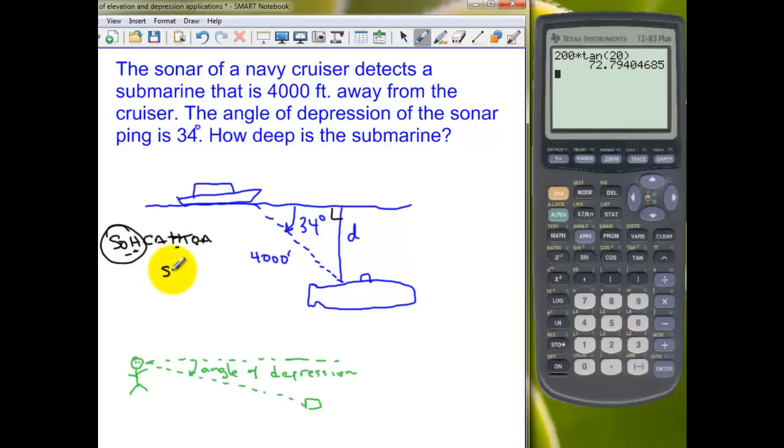So to solve our problem we can set up the sine of 34 degrees equals opposite, which is D over 4,000. So if we multiply both sides of the equation by 4,000, 34 degrees. And we can use our calculator to get that answer. So we've got here 4,000 times this time the sine of 34 degrees. And we get about 2,237 feet. So 2,237 feet deep.